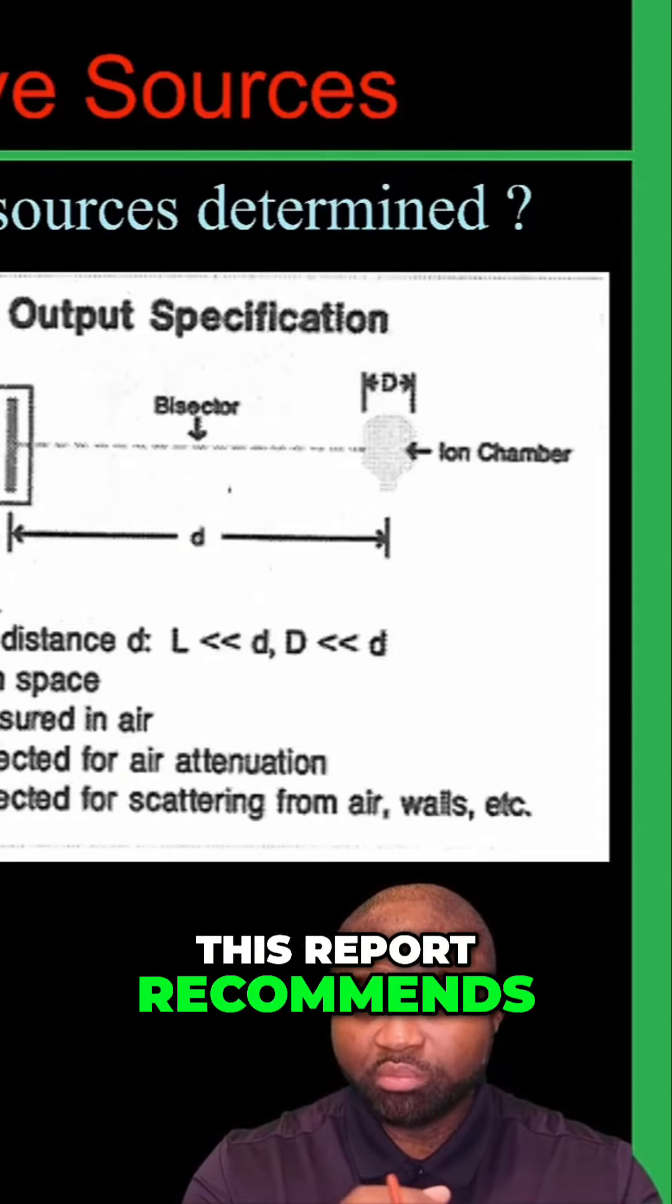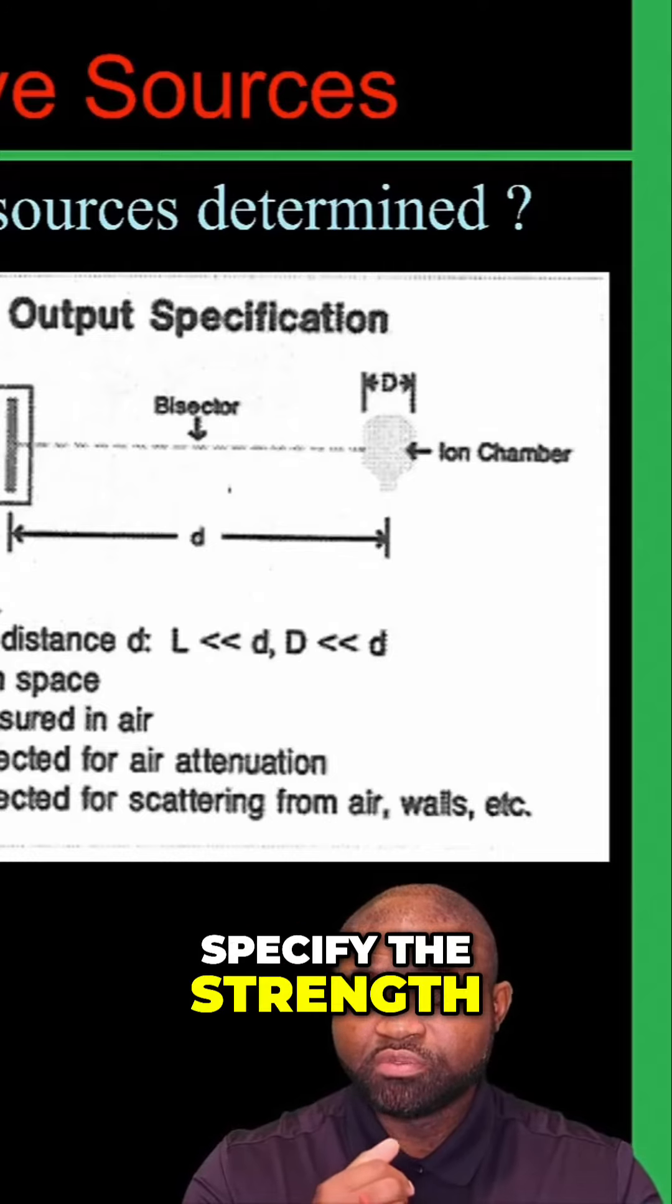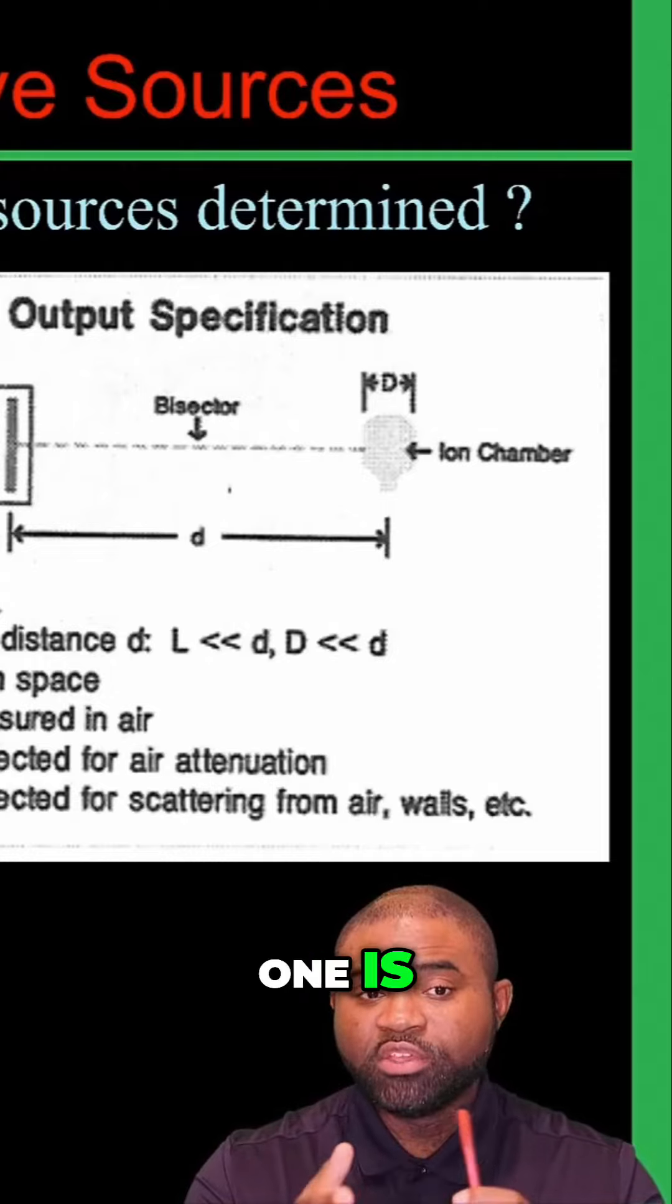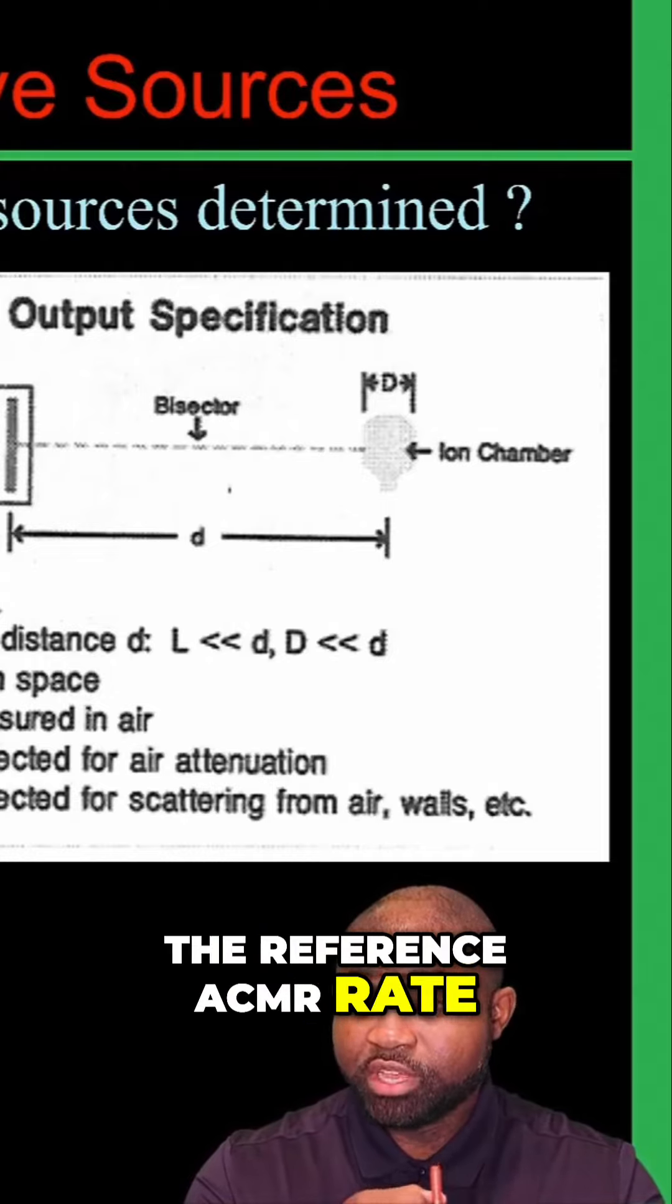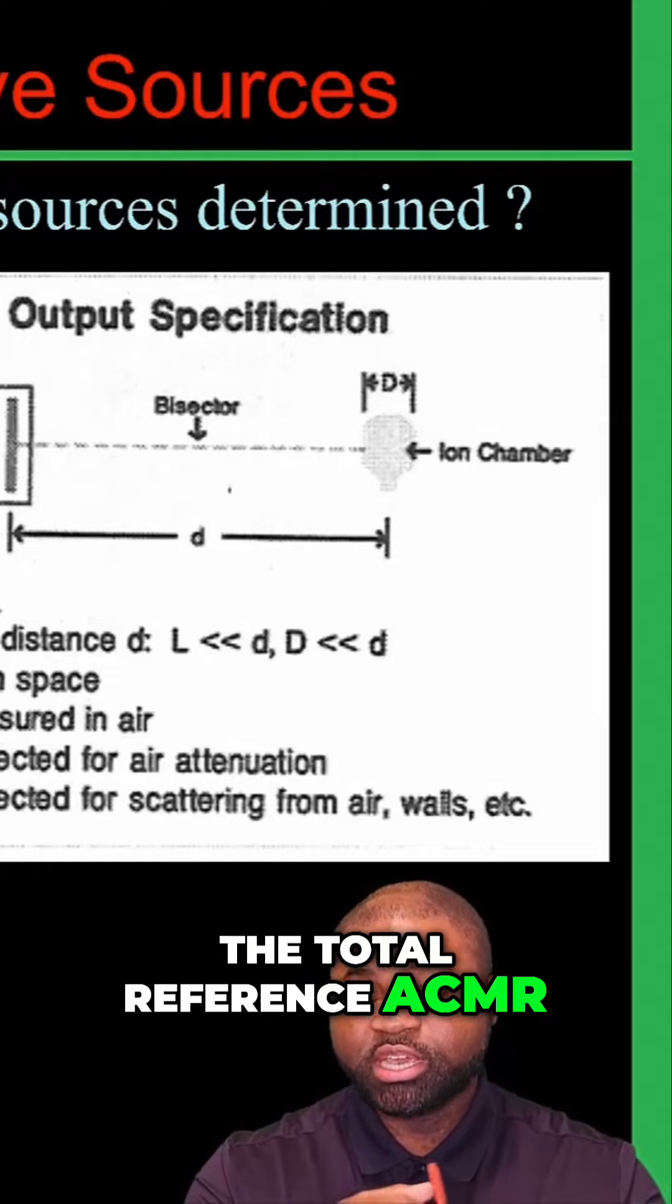This report recommends that we can specify the strength of a brachytherapy source using two physical quantities. One is the reference air camera rate, and the second is the total reference air camera type.